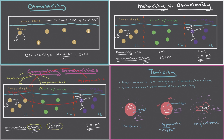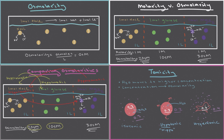One final thing to keep in mind: tonicity — isotonic, hypotonic, hypertonic — only refers to the solution on the outside of the cell, also known as the extracellular fluid or ECF. We always say the solution on the outside is isotonic, hypotonic, or hypertonic. We never say the cell or the solution inside the cell has a certain tonicity.